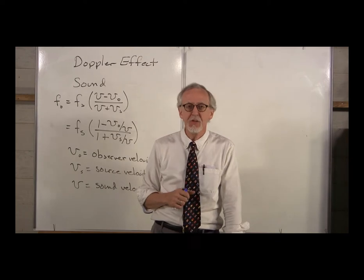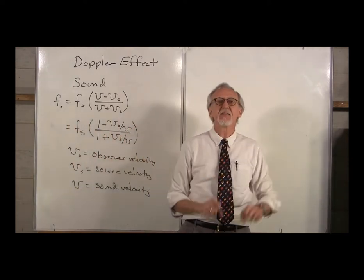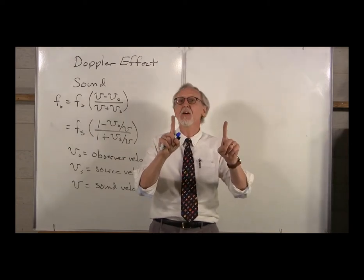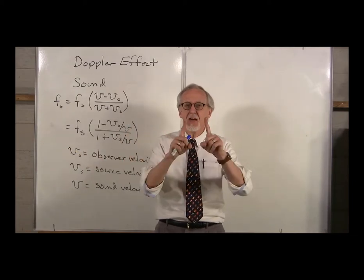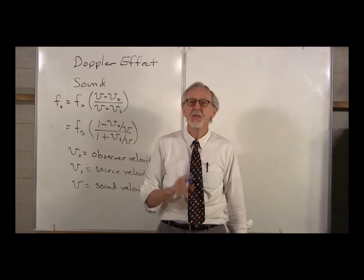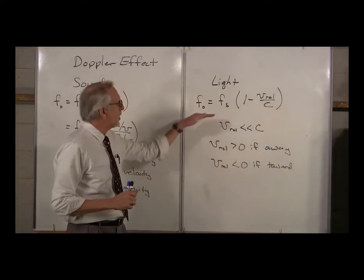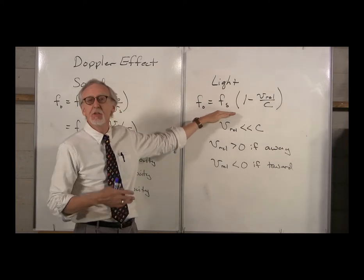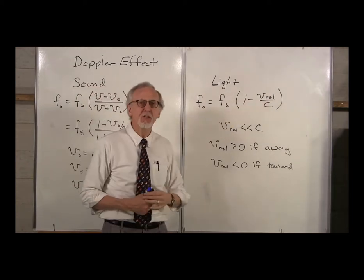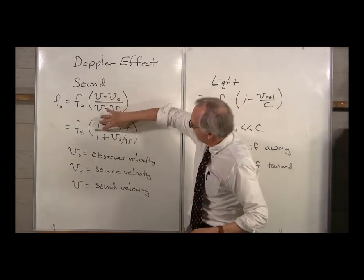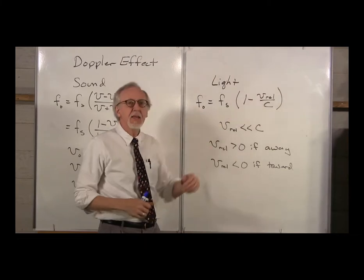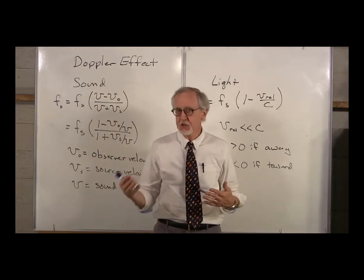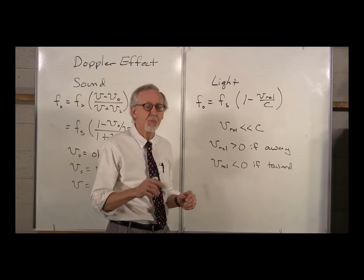Both of them moving together is exactly the same as them standing still, and the observer moving one way is exactly the same as the source moving that way. For light, the observed frequency F0 equals the source frequency Fs times (1 minus Vrel over C), which looks very much like the numerator of the sound equation but without the denominator. Here Vrel is the relative velocity of the two objects.